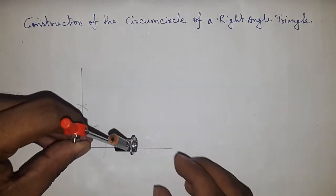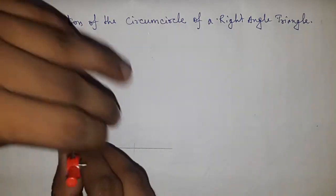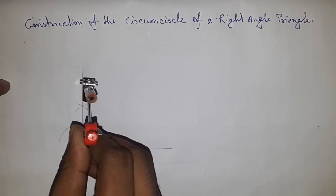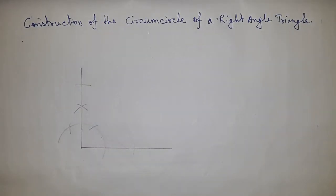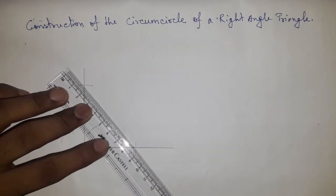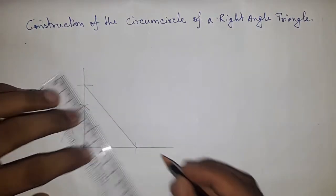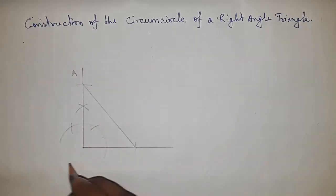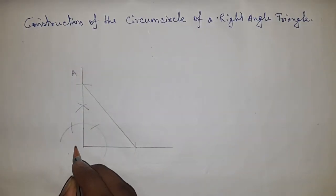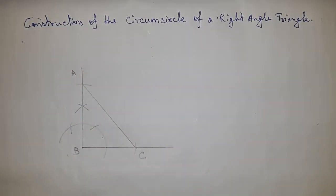Now taking any length and cut the side and also this, so now joining this two point to get the hypotenuse. So this is A point and this is B point and this is C point.